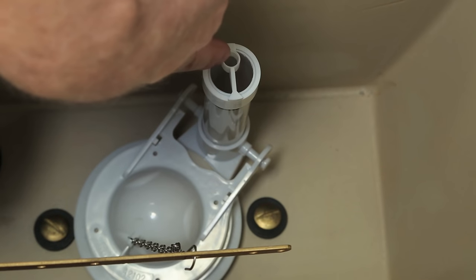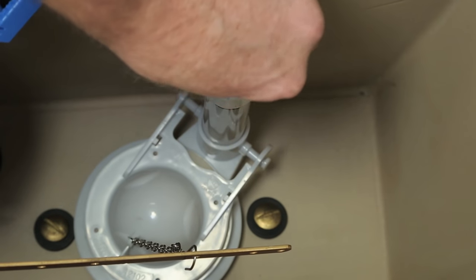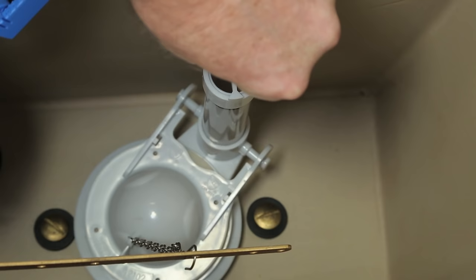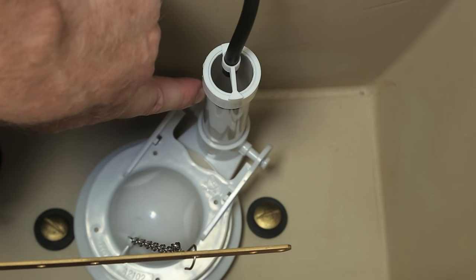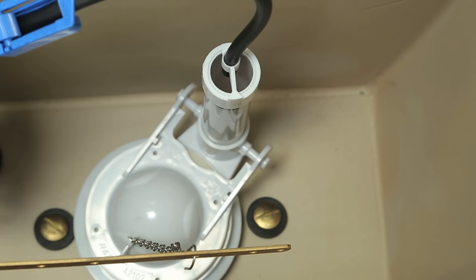You do not need to use this clip if your flush valve is already equipped with a hose retainer. The end of the hose must always be higher than the water line. Inserting the hose too far into the pipe will cause siphoning and water loss.